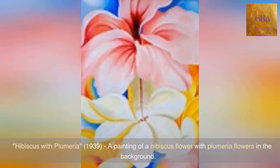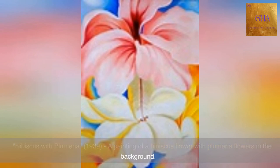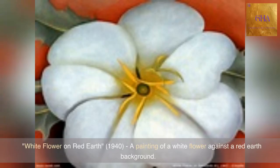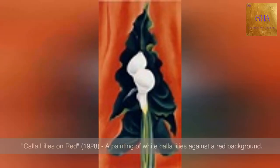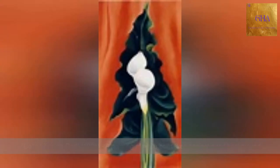Hibiscus with Plumeria, 1939: a painting of a hibiscus flower with plumeria flowers in the background. White Flower on Red Earth, 1940: a painting of a white flower against a red earth background. Calla Lilies on Red, 1928: a painting of white calla lilies against a red background.